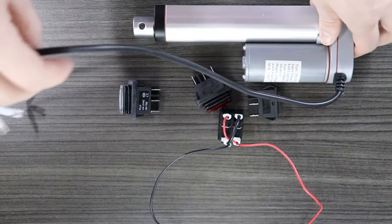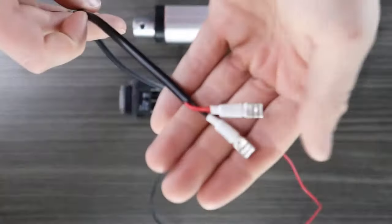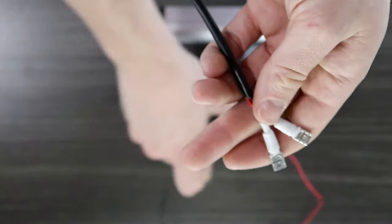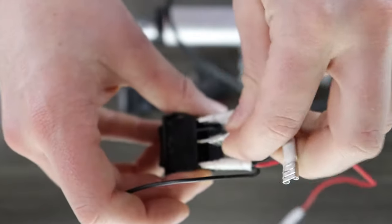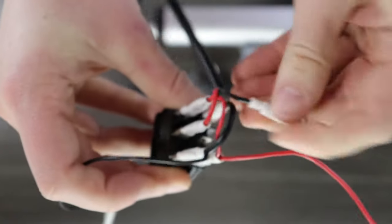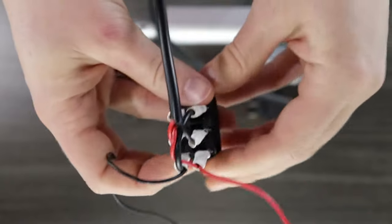Today I will be using the rocker switch with Firgelli classic linear actuators. Using two more spade connectors, I connect the actuator directly to the middle of the switch. Note that the ordering of these two wires doesn't matter.